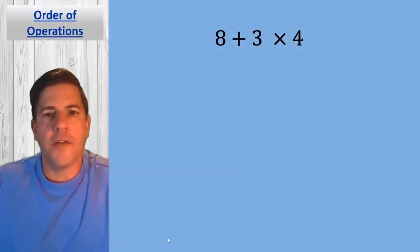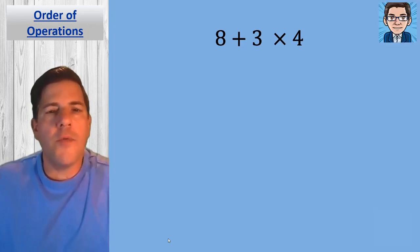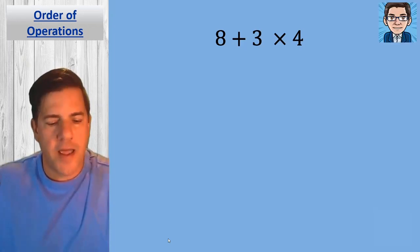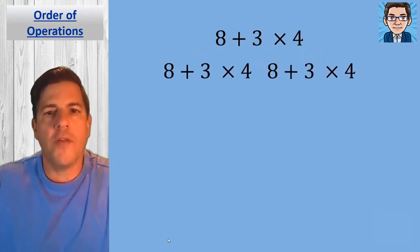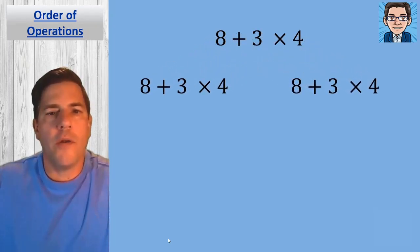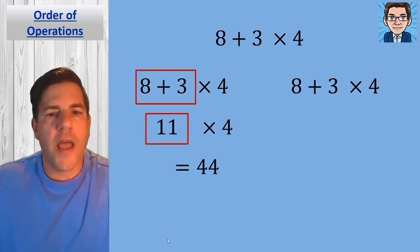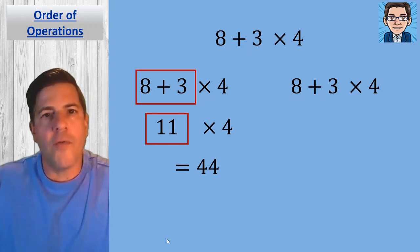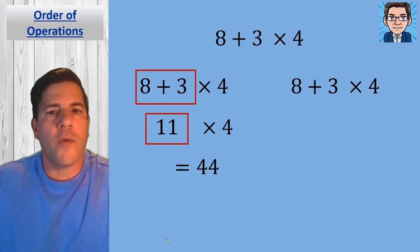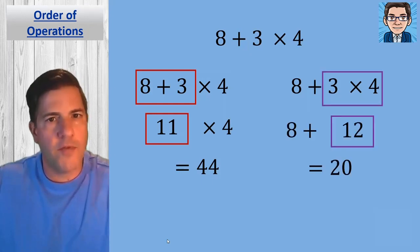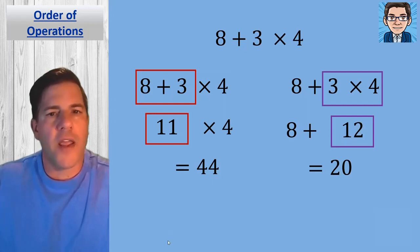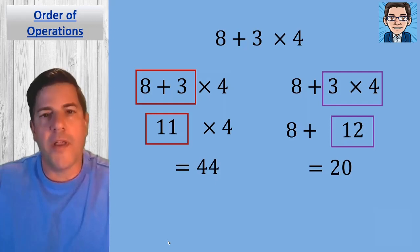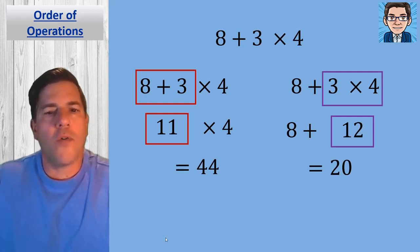Let's talk about order of operations. With a simple equation like this, if we didn't have any rules of what to do first, we could approach it two different ways. We could add 8 and 3 first, get 11, multiply that by 4, and get 44. Or we could multiply 3 times 4, get 12, add that to 8, and get 20. Getting two different answers for the same problem in math isn't acceptable, so that's where order of operations comes in.